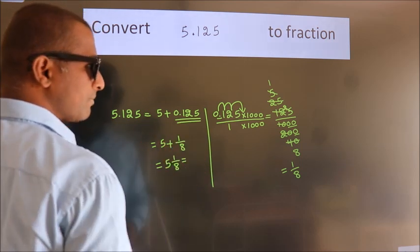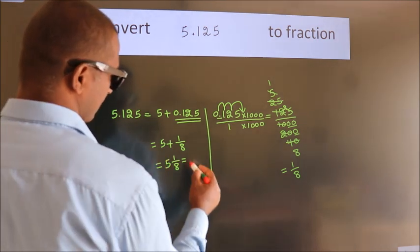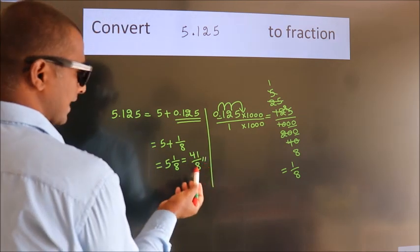And in improper fraction it is 5 into 8, 40 plus 1, 41 by 8 is our fraction.